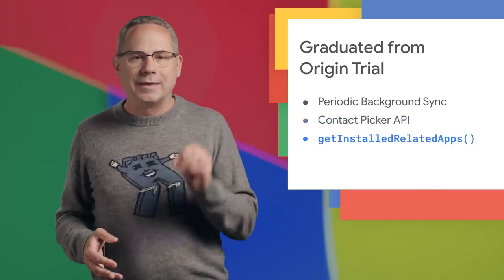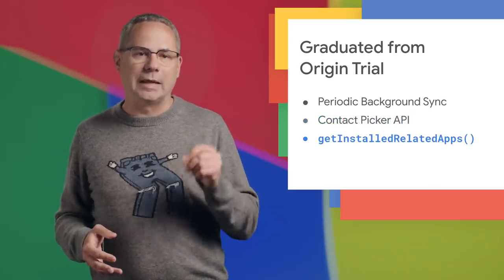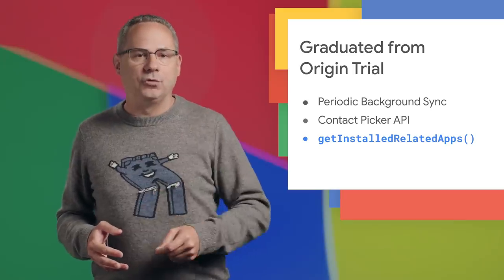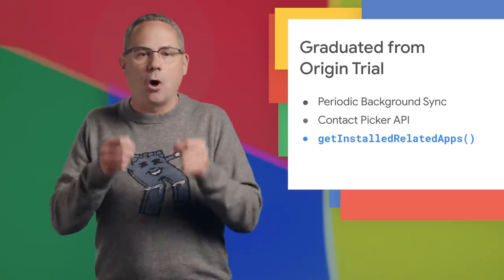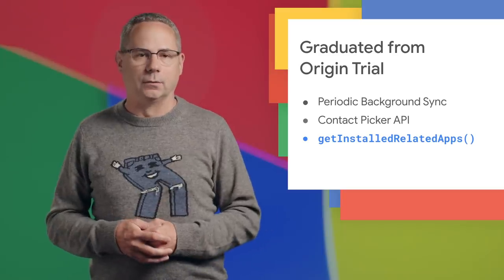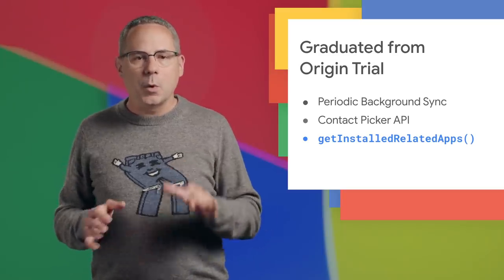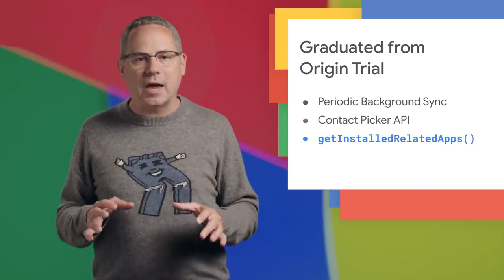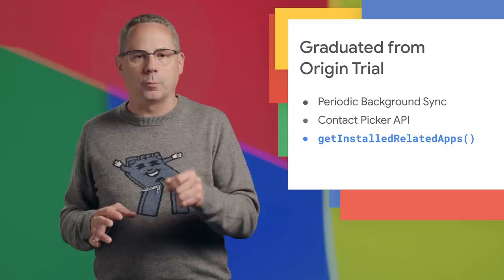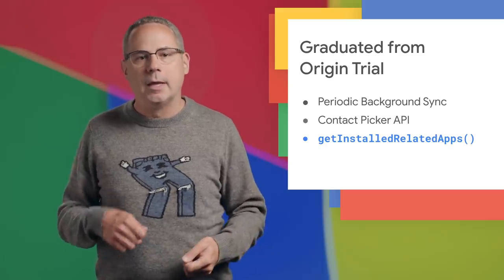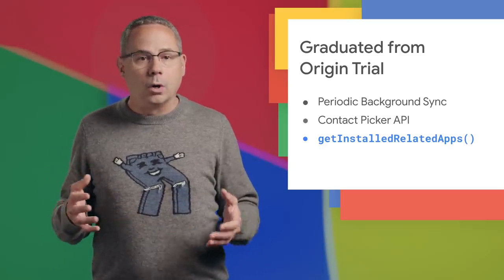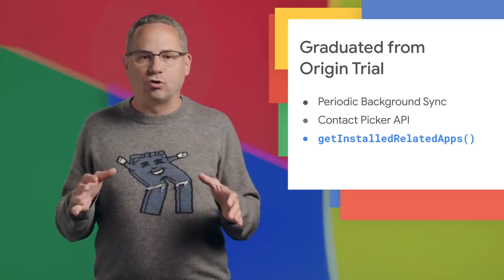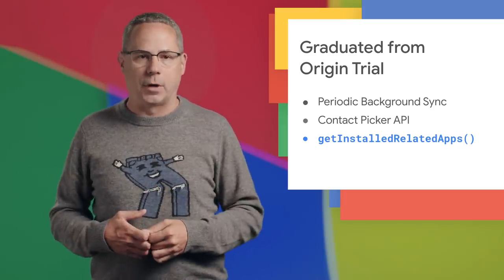And finally, the GetInstalledRelatedApps method allows your web app to check if your native app is already installed on a user's device. One of the most common use cases is for deciding whether to promote the installation of your PWA if your native app is already installed. Or you might want to disable some functionality of one app if it's already provided by the other app.